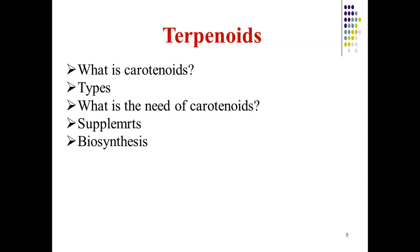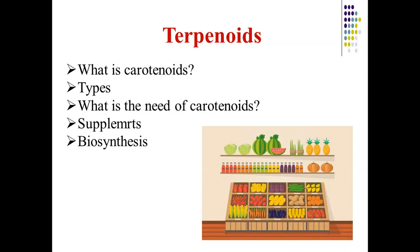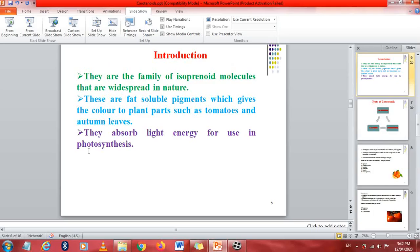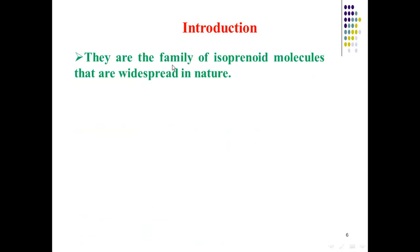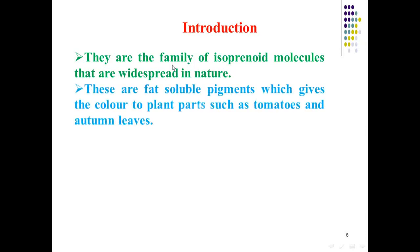In this lesson, we will discuss what carotenoids are, their types, the need for carotenoid supplements, and the biosynthesis of terpenoids. We will start with the introduction of the isopenoid molecule. Carotenoids are a family of isopenoid molecules that are widespread in nature.